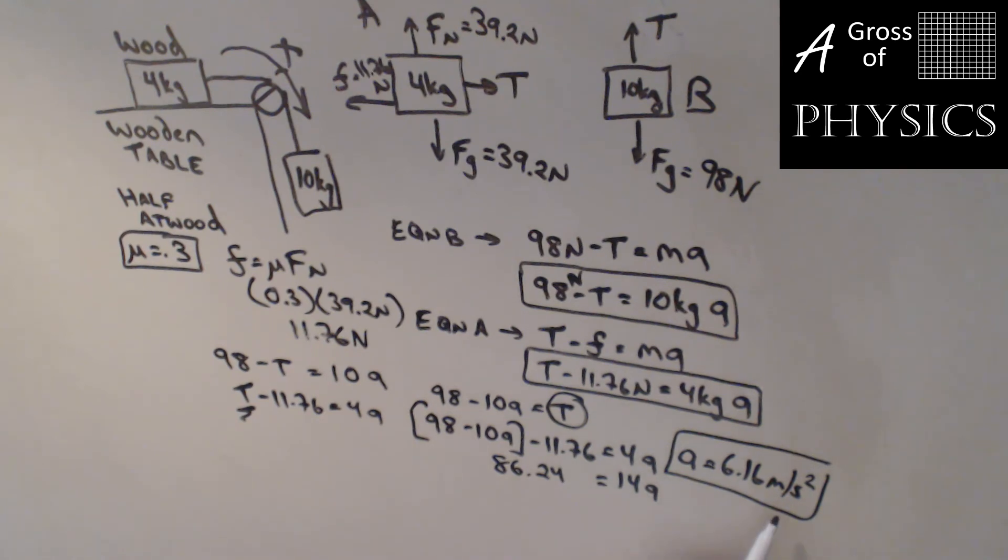Now I plug that number back into one of the equations. I'll do this one: T = 4A + 11.76. So 4 times the answer, then I add 11.76, and I get 36.4 N. So the tension is 36.4 N, and the acceleration is 6.16 m/s².